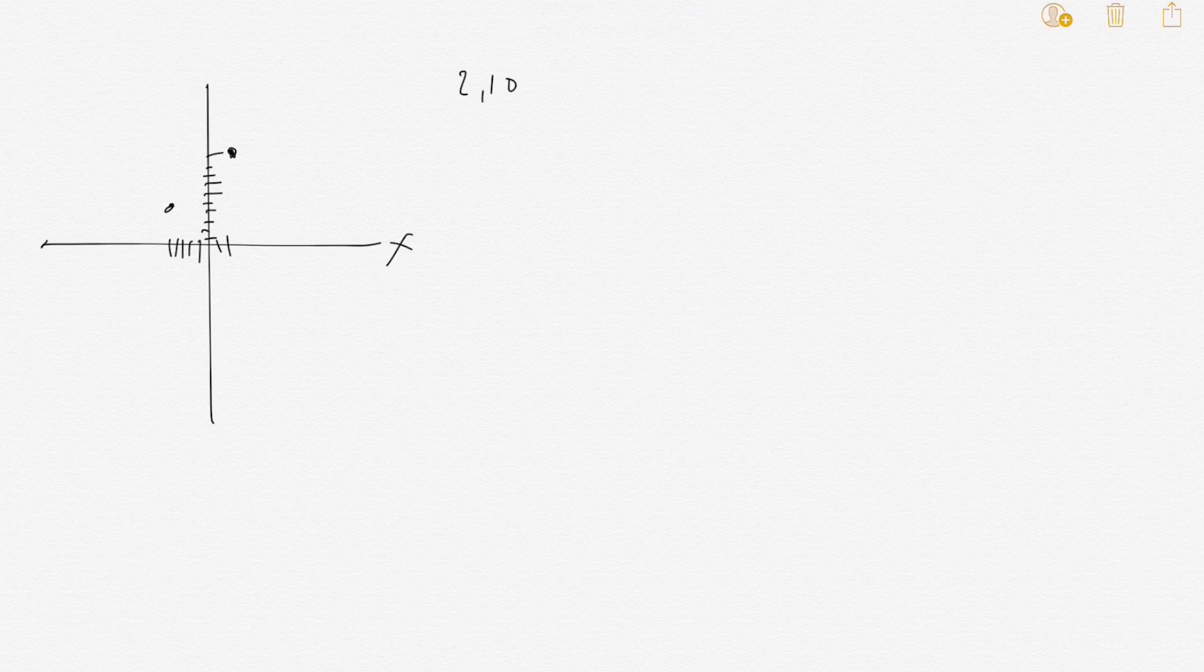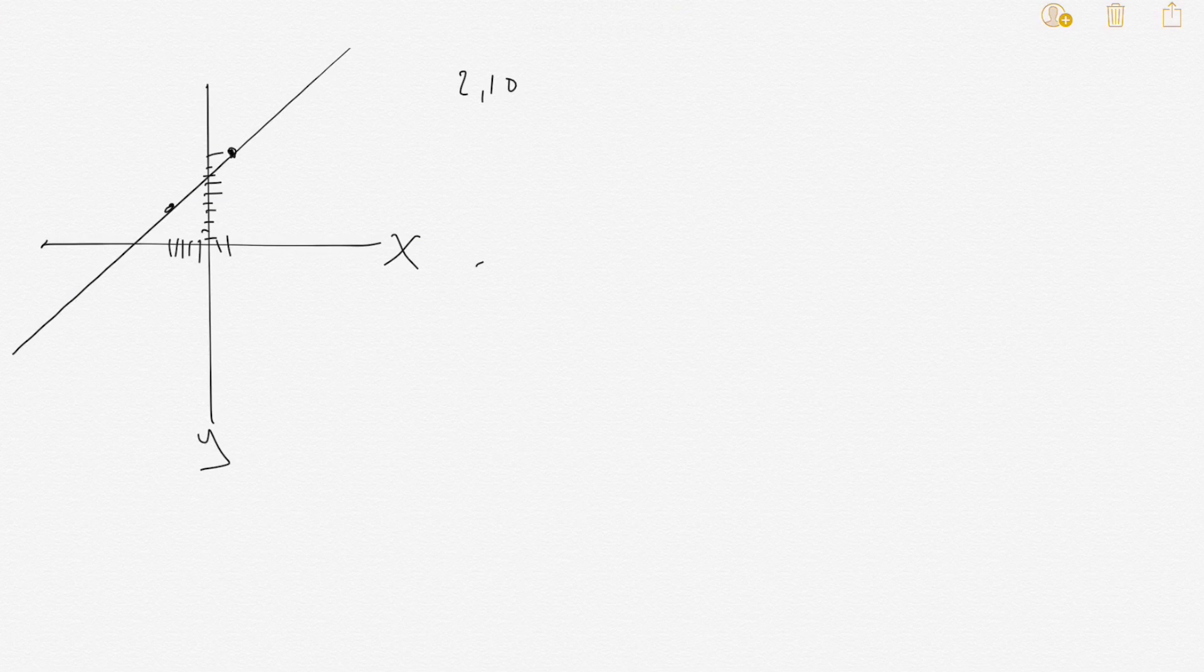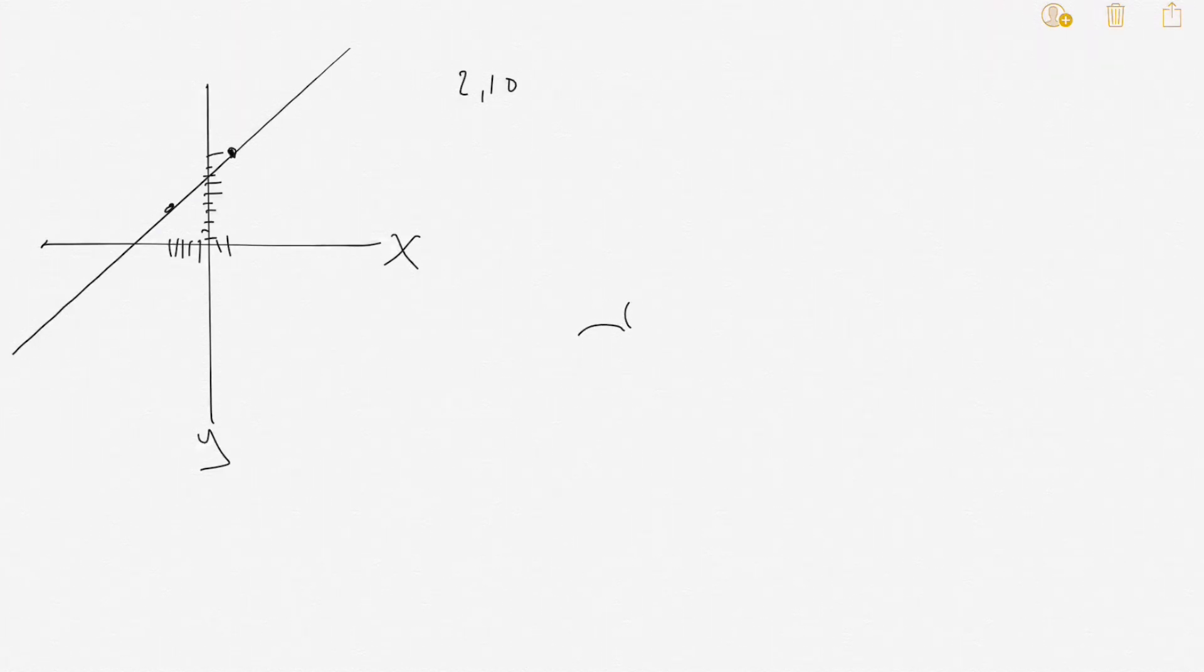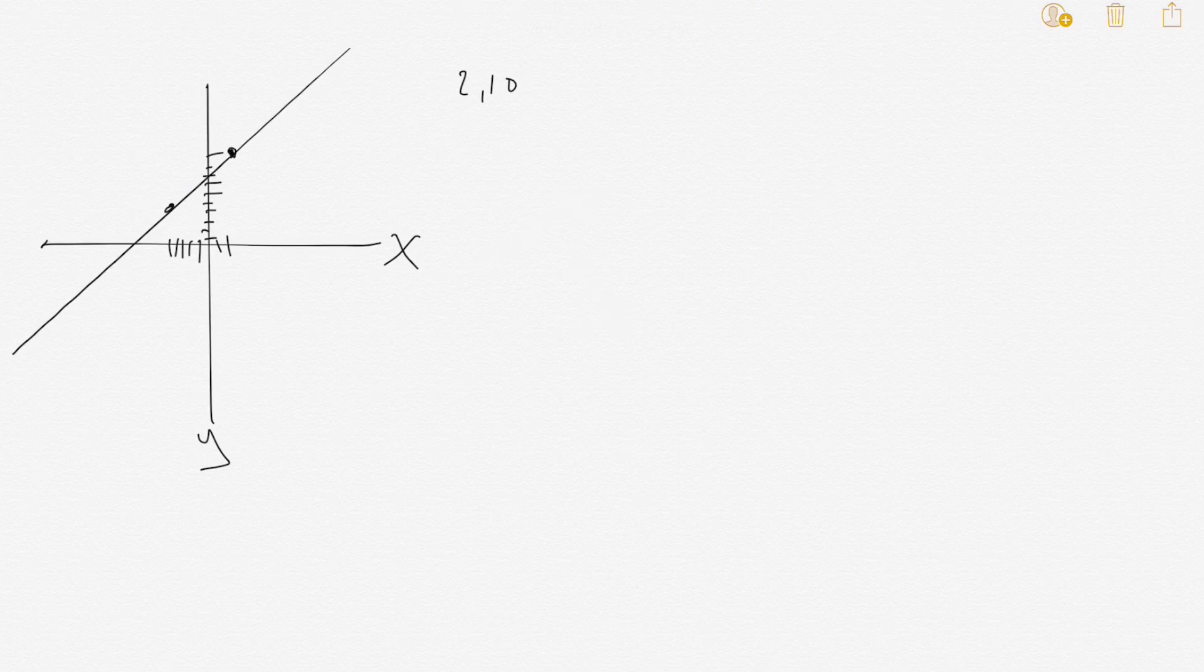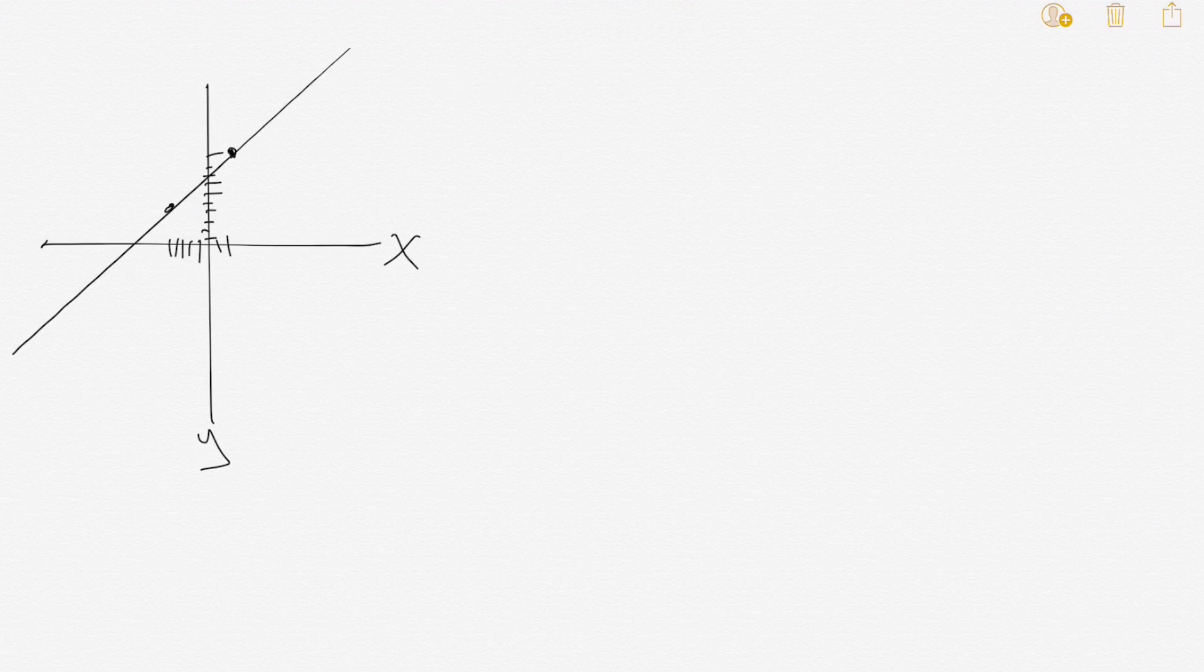Then you connect these dots. The line would look something like this. So that's our line. It's definitely a positive slope. Anytime a line goes this way it's a positive slope, and if the line goes that way it is a negative slope.